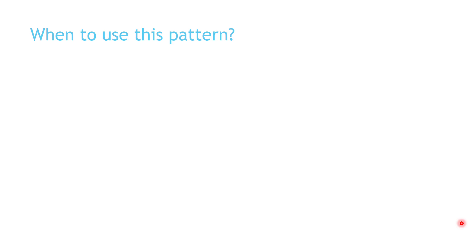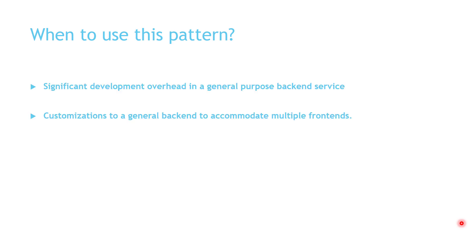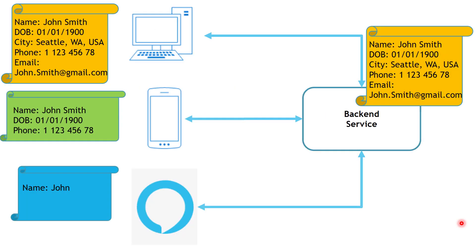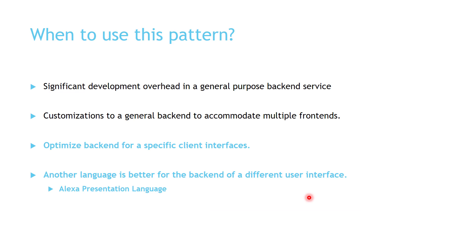Now let's see when you should use this pattern. Use it when you have significant development overhead in a general backend service — when a single backend serves different frontends each requiring different amounts of information, requiring a lot of customization. Also use it when you want to optimize the backend for a specific frontend or client interface. And sometimes, a different language may be better suited for a specific frontend's backend service, such as the Alexa Presentation Language.